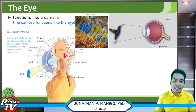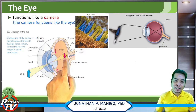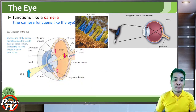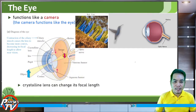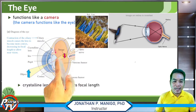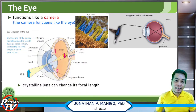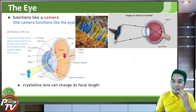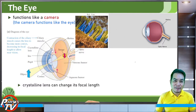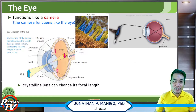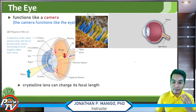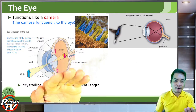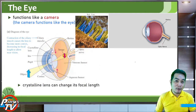The images that we see are actually real and inverted, and it is the brain that processes and inverts those images. The crystalline lens of the eye can actually change its focal length — that is one advantage of our eye. It can change focus depending on where the object is located.